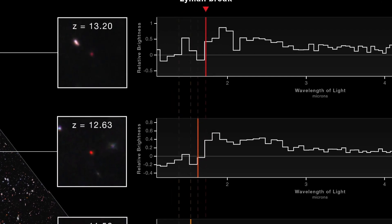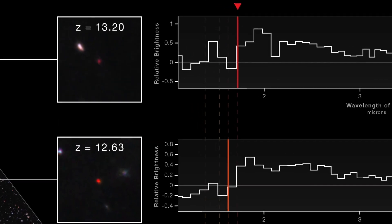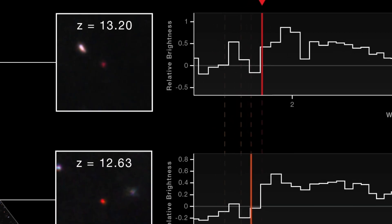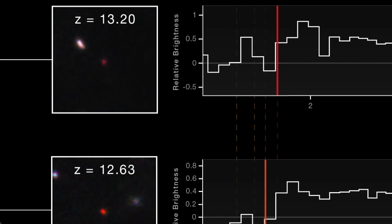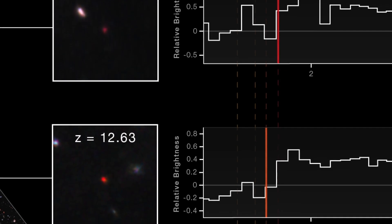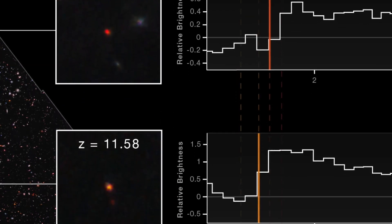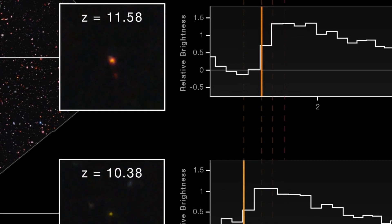Four of the galaxies Webb studied are particularly interesting because they were found to be at an unprecedentedly early epoch. The results of the study provided spectroscopic confirmation that these four galaxies are at redshifts above 10, including two at redshift 13. This corresponds to a time when the universe was about 330 million years old, which opens a new frontier in the search for distant galaxies.